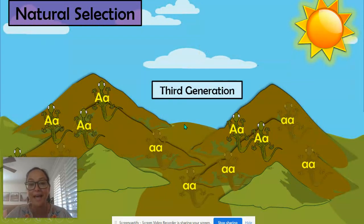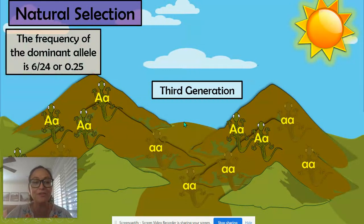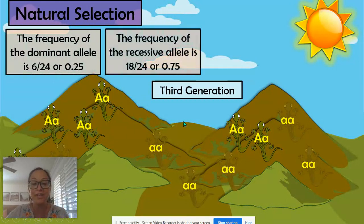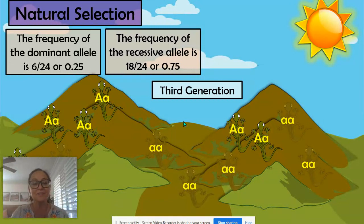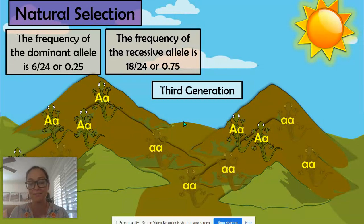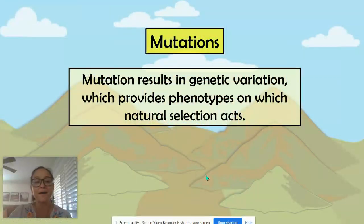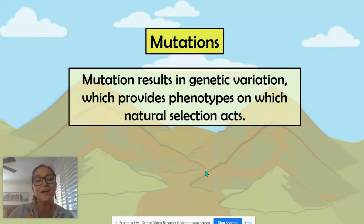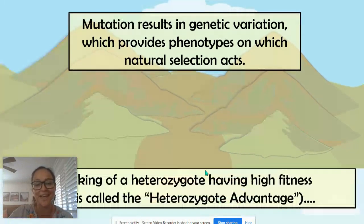If this heterozygote had an advantage at surviving, you can see how the allele frequency is going to change over the generations. We started with 0.5 and 0.5, and now it's 0.25 and 0.75. So the allele frequency has changed. Mutations are random events that can then be acted on by natural selection. Mutation results in genetic variation, which provides phenotypes on which natural selection acts.